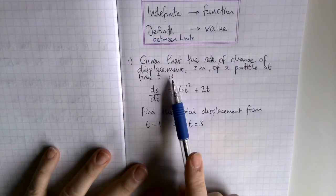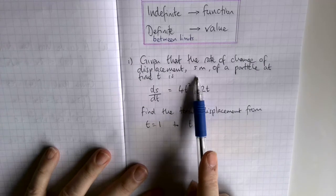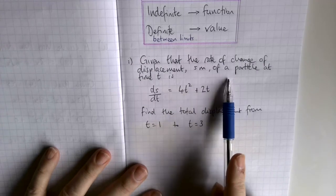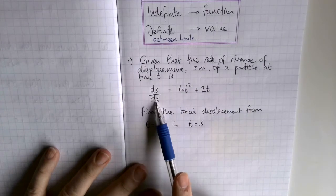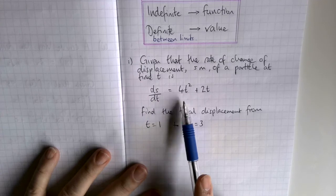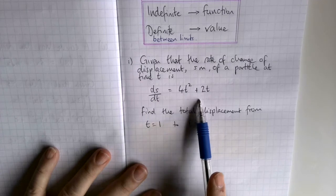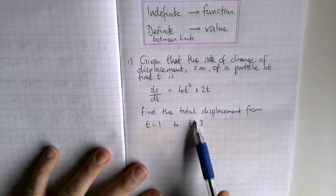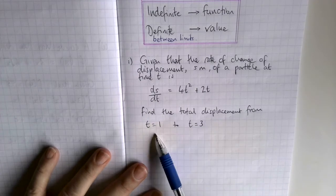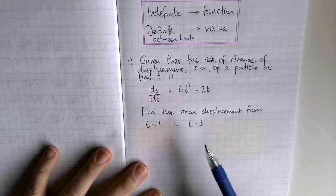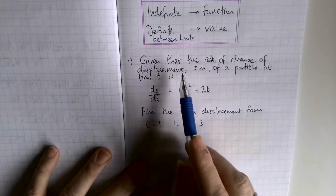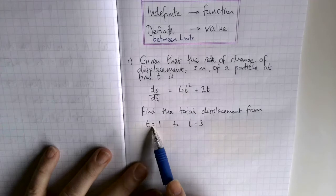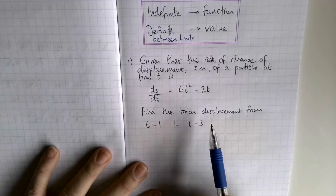Given that the rate of change of displacement s meters of a particle at time t is given by ds/dt equals 4t squared plus 2t, find the total displacement from t equals 1 to t equals 3. These are what we're talking about with the limits — I want to know between 1 and 3 what the displacement was.